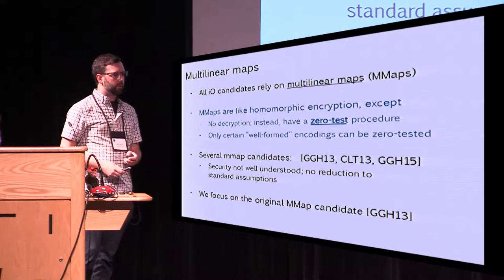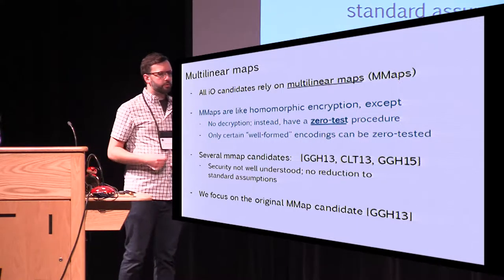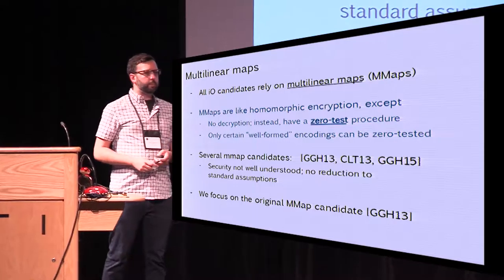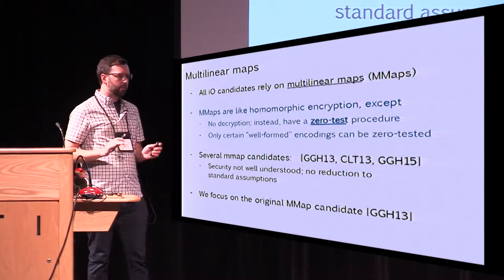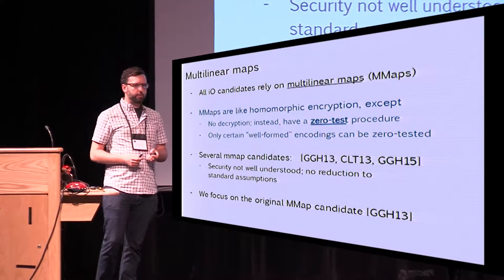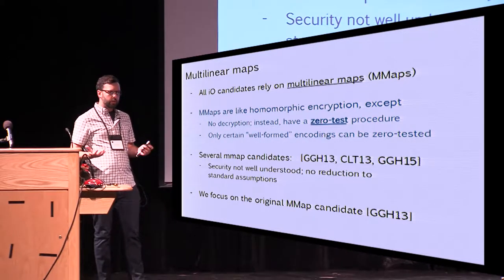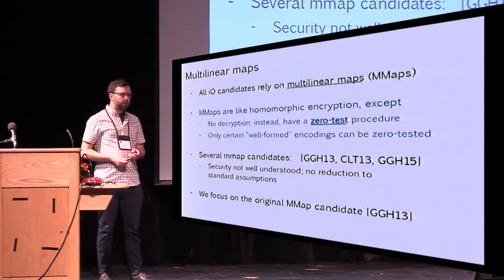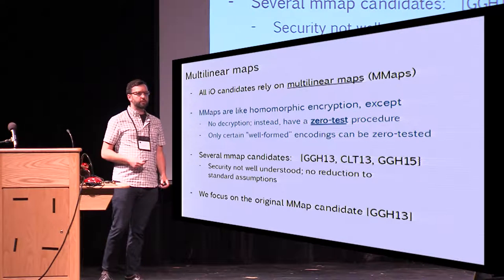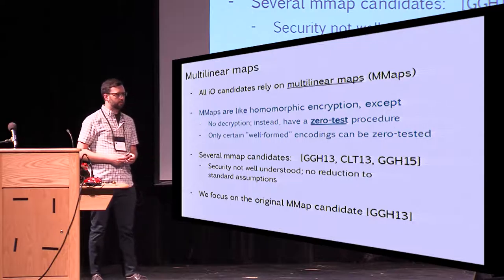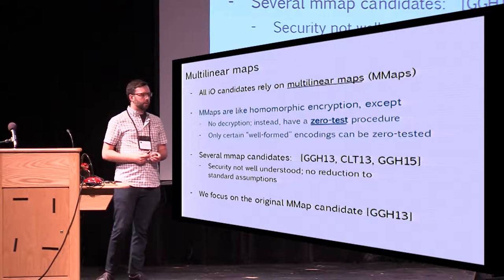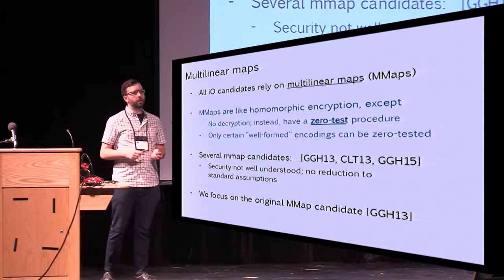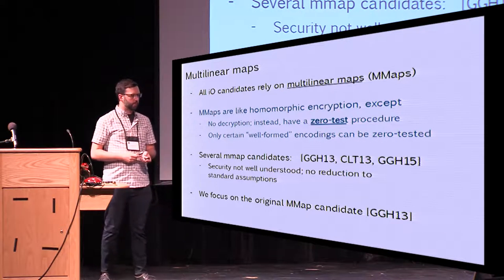You just saw a talk about multilinear maps. Indeed, all of the IO candidates we have rely on multilinear maps. You can think of multilinear maps at a very high level sort of like homomorphic encryption, in the sense that you have a bunch of encoded elements and you can do arithmetic on them. The difference is that in multilinear maps, there's no decryption. Instead, we have this thing called a zero test procedure, and you can't zero test everything — only certain encodings that are well-formed can be zero tested.